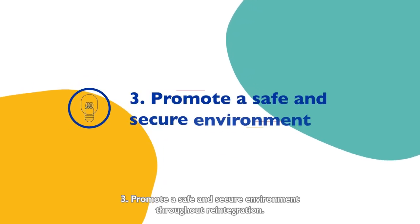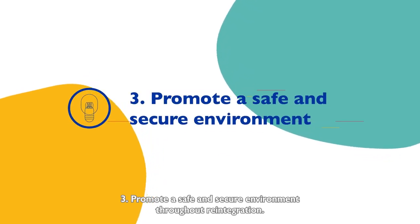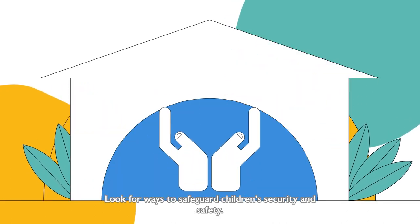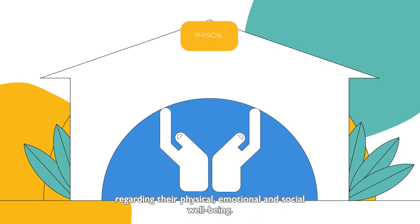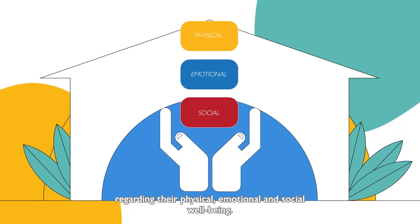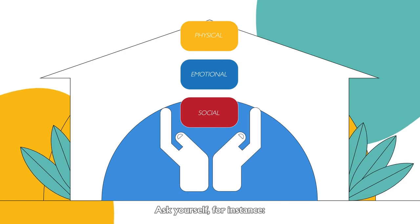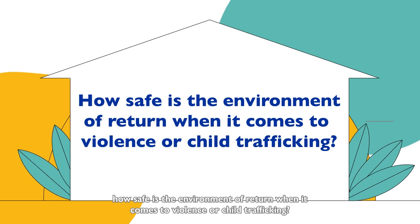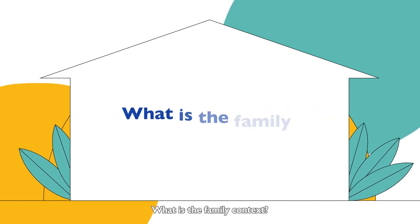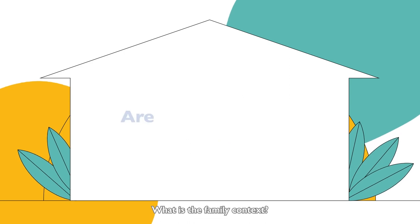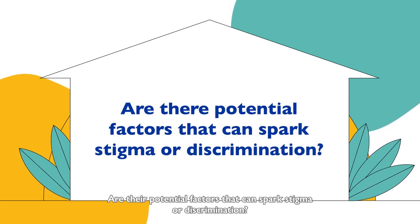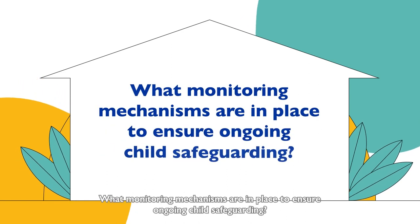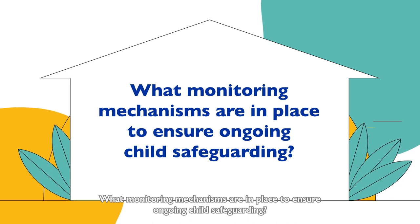3. Promote a safe and secure environment. Throughout reintegration, look for ways to safeguard children's security and safety regarding their physical, emotional and social well-being. Ask yourself, for instance, how safe is the environment of return when it comes to violence or child trafficking? What is the family context? Are there potential factors that can spark stigma or discrimination? What monitoring mechanisms are in place to ensure ongoing child safeguarding?